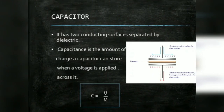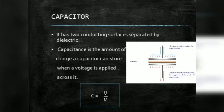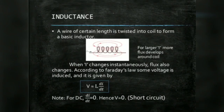For capacitance: a capacitor has two conducting surfaces separated by a dielectric material, which can be paper, air, or oil. Capacitance is the amount of charge a capacitor can store when a voltage is applied across it. One surface accumulates positive ions and the other negative ions, creating a potential difference between the two plates. C equals Q divided by V — charge per voltage. The unit of capacitance is the Farad. The unit of inductance L is the Henry.